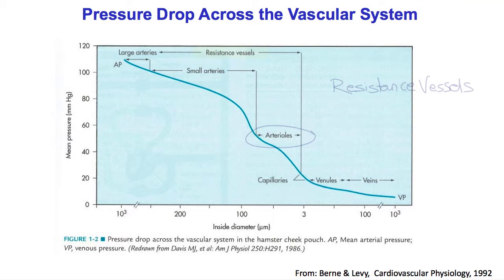Continuing down the vasculature, the vessels continue to get smaller, and consequently the pressure drop is greater. And the portion of the arterial tree where the pressure drop is greatest is the arterioles, which are about a hundred microns in diameter in the hamster cheek pouch, down to about 10 microns in diameter. And these are called the resistance vessels.